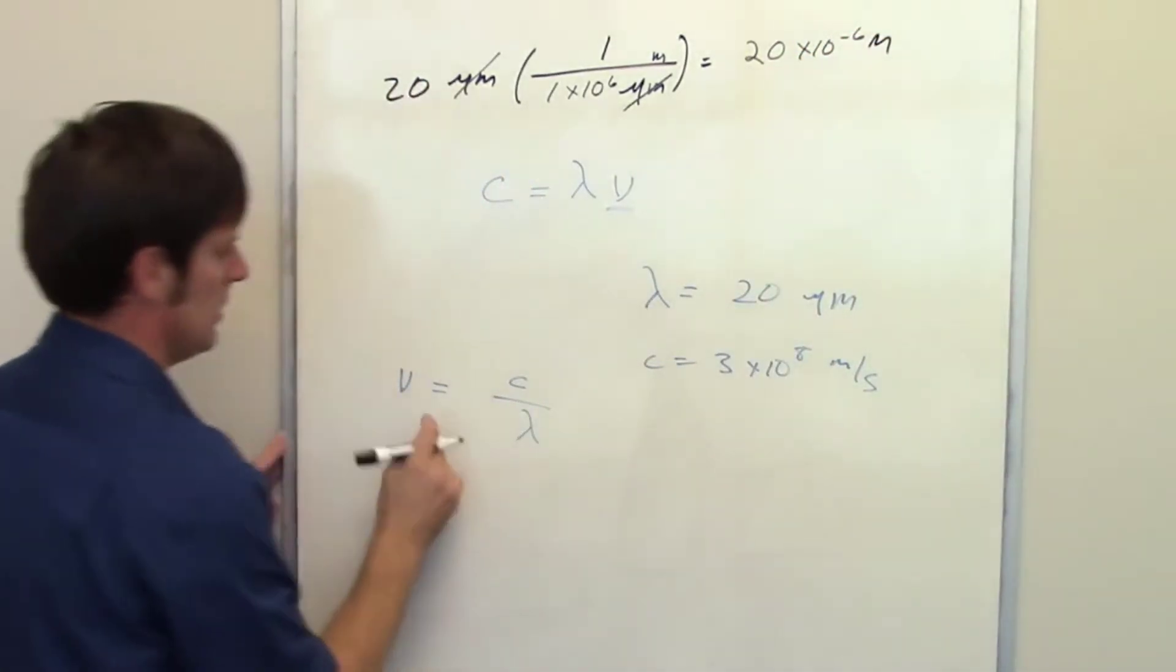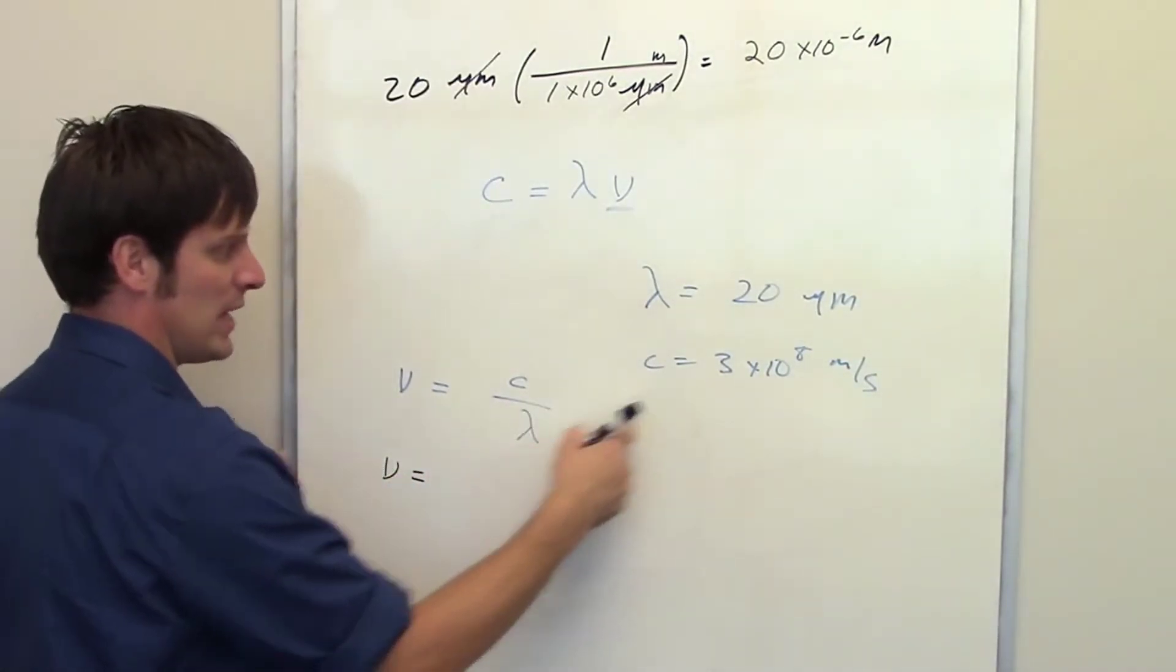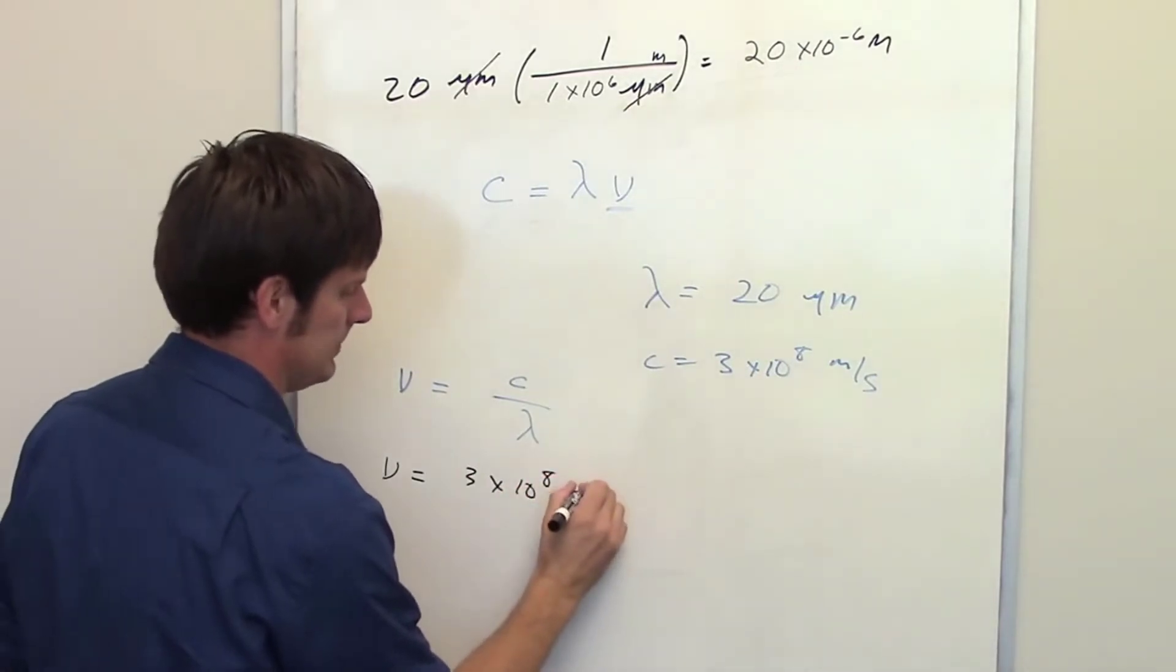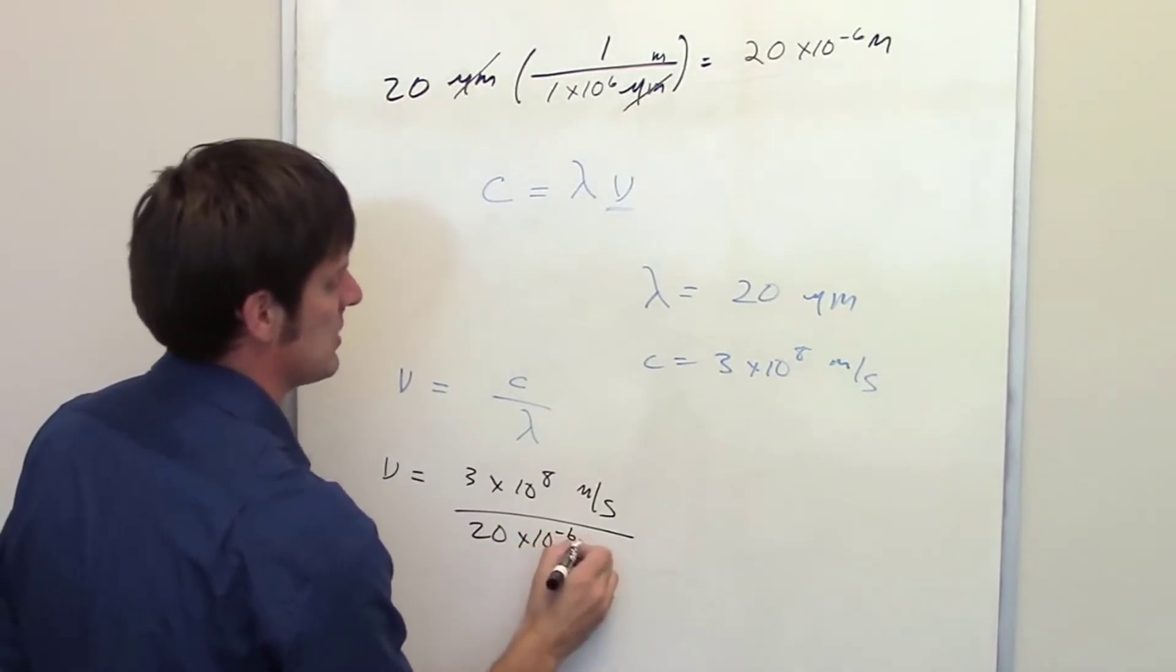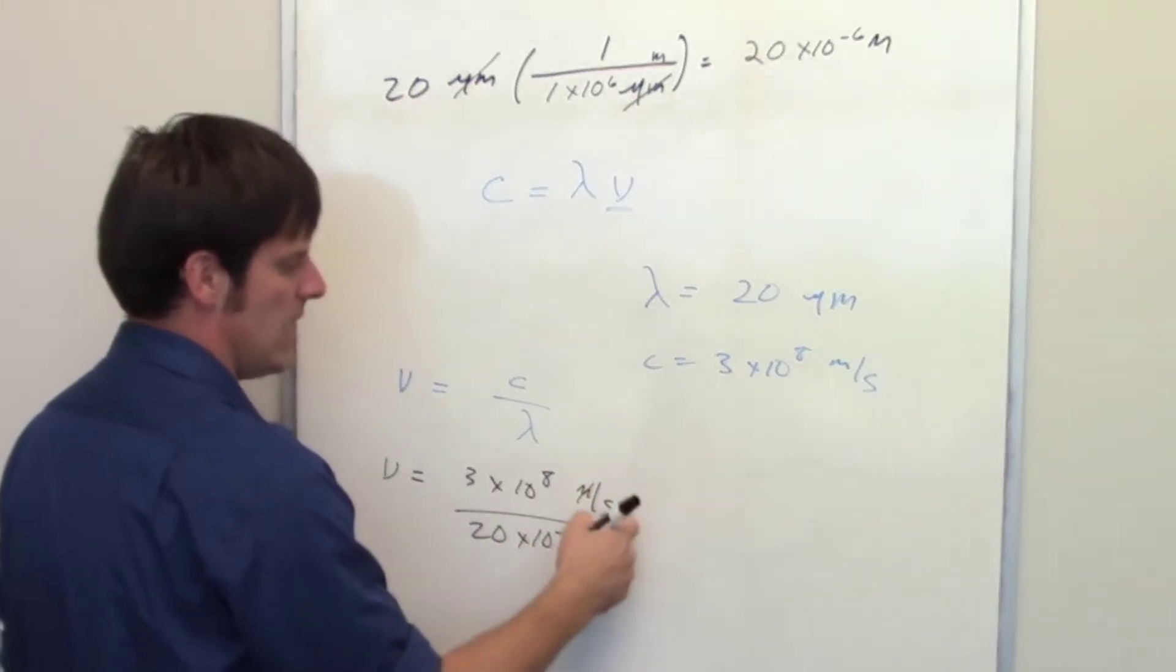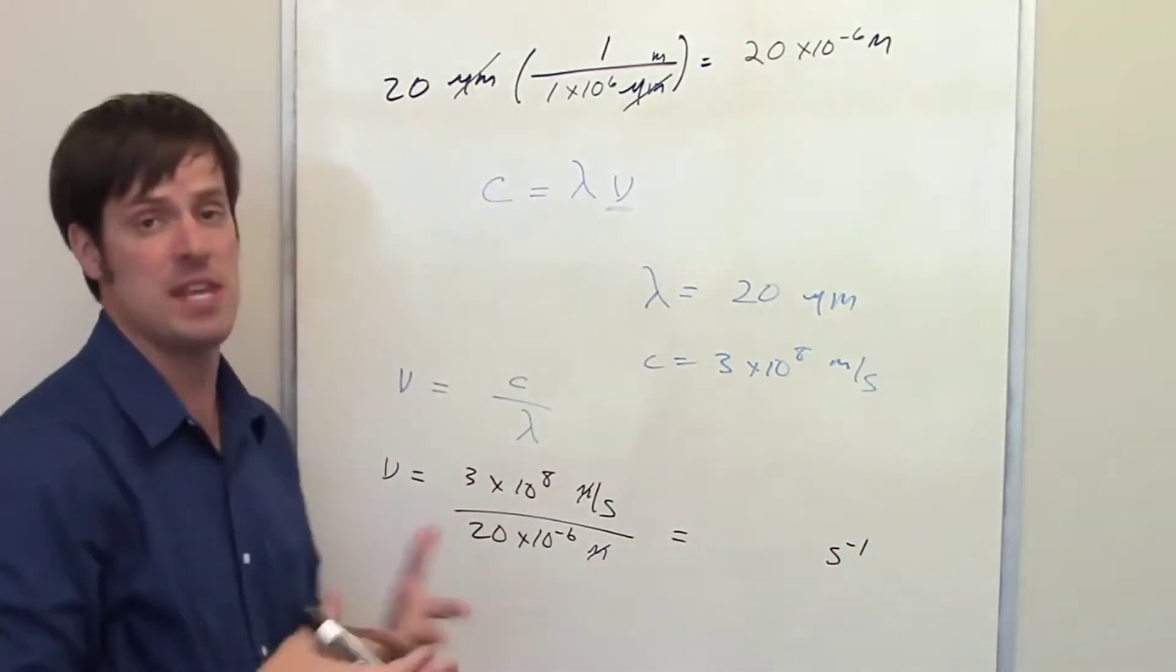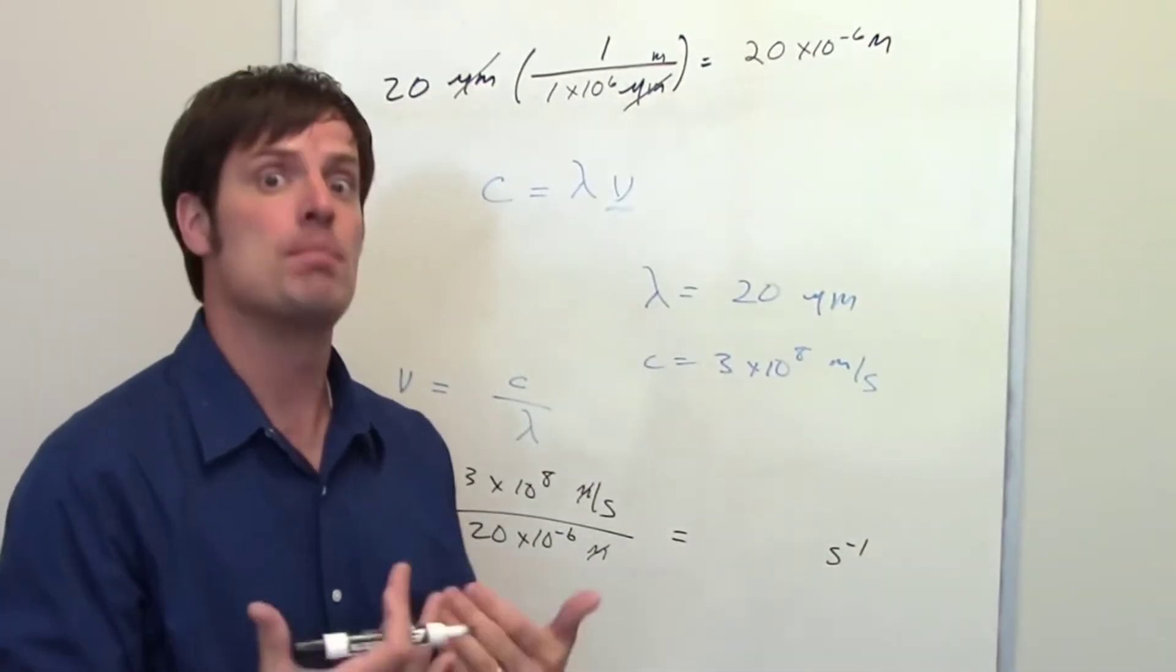Now I need to solve for my frequency. Frequency is equal to the speed of light divided by wavelength, which is 3 times 10 to the eighth meters per second, divided by my wavelength, which is 20 times 10 to the negative sixth meters. The meter units cancel each other out, and I end up with units of inverse seconds, which are the units for frequency.